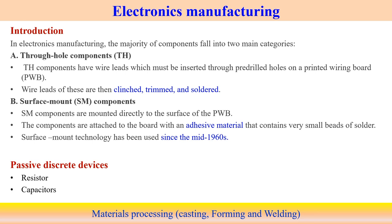In electronics manufacturing, components fall into two major categories: through-hole components and surface mount components. Through-hole components involve inserting a wire lead through a pre-drilled hole in the printed wiring board (PWB), and the lead is bonded — either crimped, trimmed, or soldered — to connect the components.